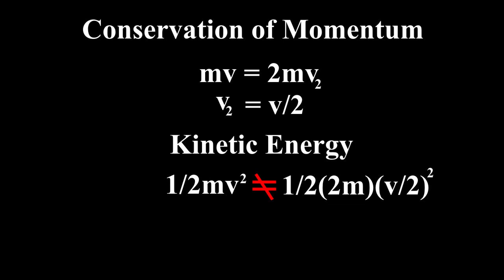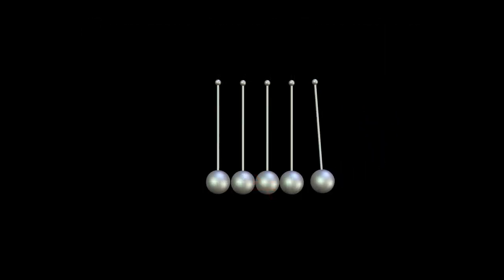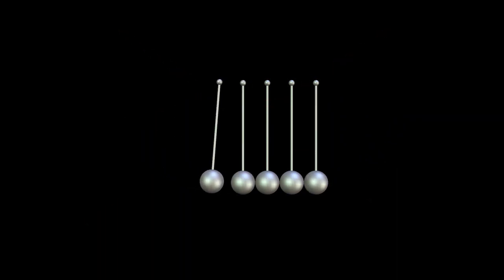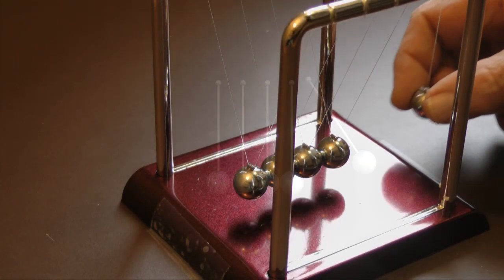The math is telling us one sphere striking the row of spheres will not displace two spheres. Only one. The only action that respects both the laws of conservation of energy and momentum requires that if a single sphere enters the system, a single sphere exits the system. This results in the same velocity in and out.